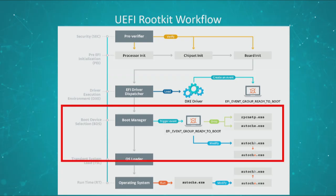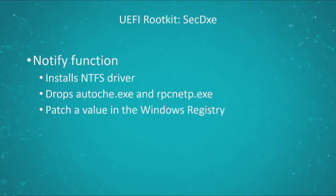When the firmware will go to the next phase — the boot device selection phase — the boot manager will run, and at some point it will signal the EFI event group ready-to-boot event. At this point, the notify function will be called. The notify function does three things: first, it will install an NTFS driver; then it will use this NTFS driver to drop autochi.exe and RPCnetP.exe; and finally, it will patch a value in the Windows registry for persistence purposes.